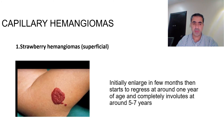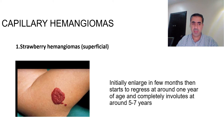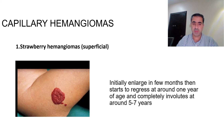The first type of hemangioma is the superficial hemangioma, or strawberry hemangioma. It initially enlarges over a few months, then starts to regress at around one year of age and completely involutes at around five to seven years of age. These lesions are usually benign, but sometimes may undergo ulceration, infection, or involvement of the eye or the upper airway, which may put the patient in danger. Clear guidelines are published in the literature about management of these lesions, which is beyond the scope of our lecture.